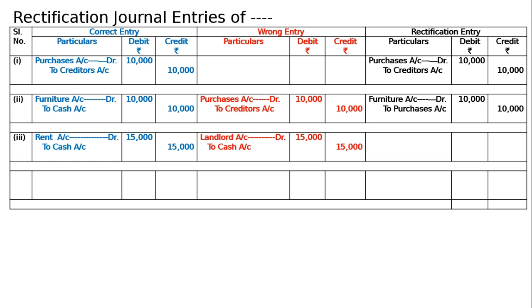The rectification entry: rent account debited to landlord account — rent will come, landlord will go. Hence debit rent to rectify. Rent account debited 15,000 to landlord account 15,000. If there is a mistake in the debit, crediting it will nullify the effect. Being rent paid, by mistake debited to landlord's personal account, now rectified.